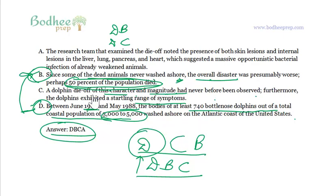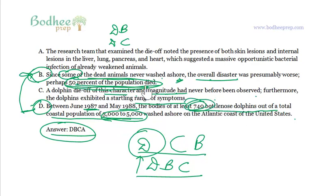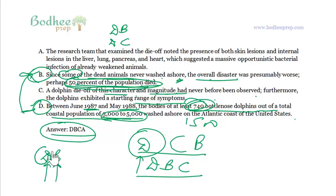The author says 3,000 to 5,000 washed ashore, but since some of the dead animals never washed ashore, the overall disaster was presumably worse — perhaps 50% of the population died. So 740 is nothing; the author says it's basically 50% of the entire population, somewhere around 1,500. DB is a better pair because both contain statistical information — one is a certainty, a fact; the other is a guesswork based on the reasoning that some of the dead animals never washed ashore.